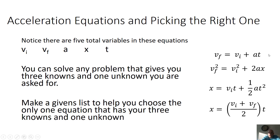You have four acceleration equations. Notice there are only five possible variables across all of them: VI, VF, A, X, and T. You'll never use plain V in acceleration equations. If you have three of these variables known and one unknown, that leads you to exactly one equation. So when you make your givens list, include your unknown — what you're solving for — because that helps you pick the right equation.